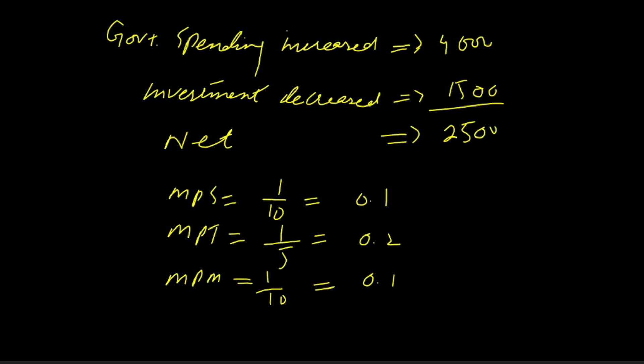Other given information in the question was marginal propensity to save is one over ten, that will be equal to 0.1. Marginal propensity to tax was one over five, that is equal to 0.2.